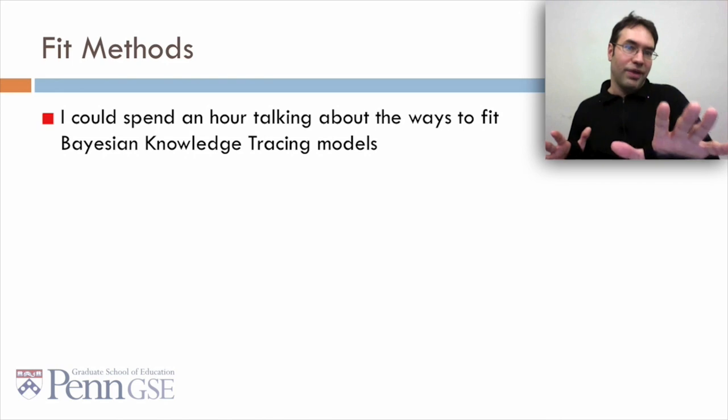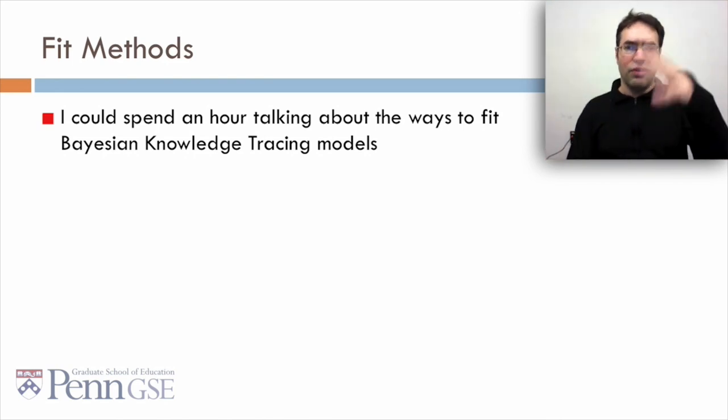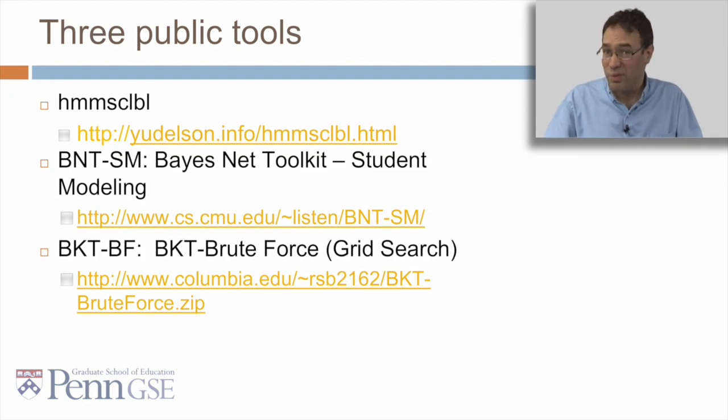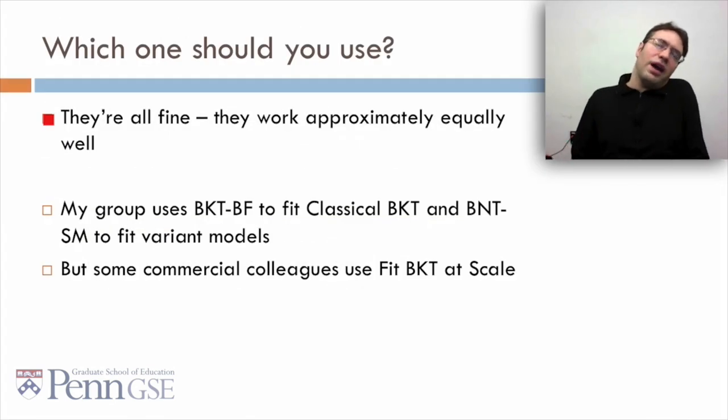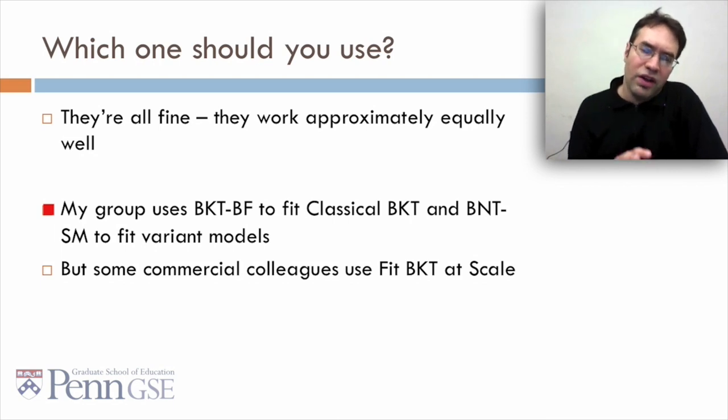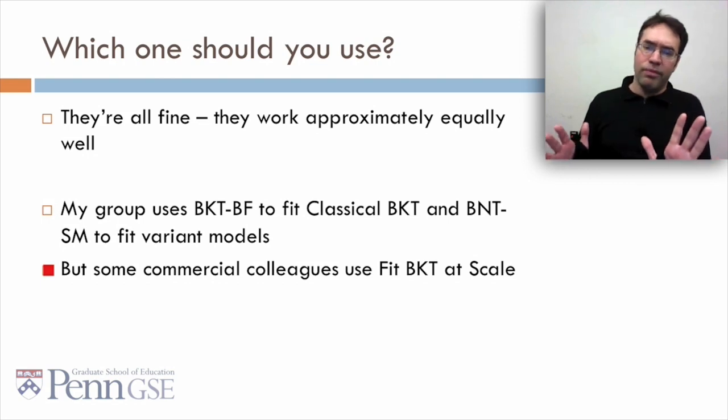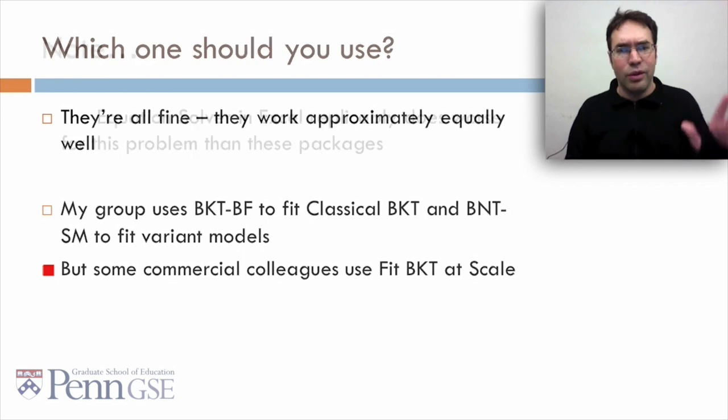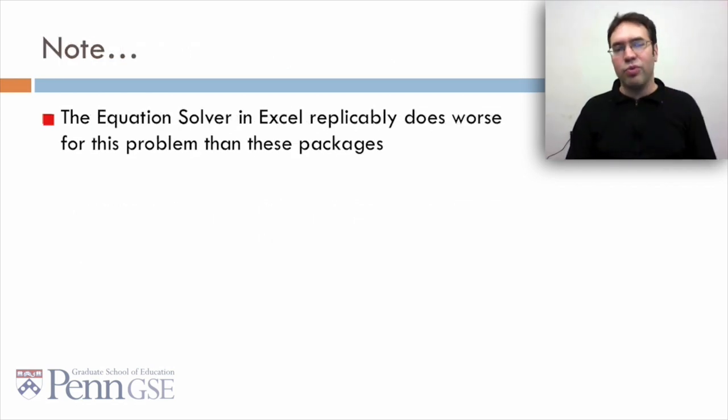Now I could talk for an hour or more, many hours, talking about the ways to fit Bayesian knowledge tracing models. I'm a total geek for this. If you don't want to get to the trouble of fitting it yourself, which probably isn't worth the trouble unless that's actually an area of interest for you, there are three public tools you can use. Probably the best one is HMM-SCL BL by Michael Udelson, but two other options are BNTSM, the Bayes Net Toolkit Student Modeling, which does expectation maximization, and BKT-BF, BKT Brute Force, which does a grid search algorithm. All three of these are open on the web and you can use them. Which one should you use? Obviously I'm biased because I helped write one, but they're all fine really. They work approximately equally well. My group uses BKT-BF to fit classical BKT and BNTSM to fit the variant models, and I'll talk about those in a few lectures. But some of my commercial colleagues use fit BKT at scale and they're pretty happy with it. They're all fine. The one thing you shouldn't do is to use the Excel equation solver. That replicably does worse for the problem than these packages. Not a good idea. Use some existing package and they're out there. In your assignment you'll have a chance to do that.